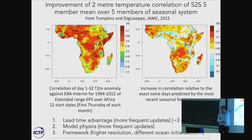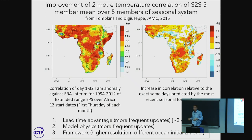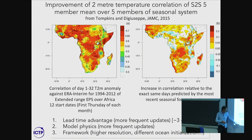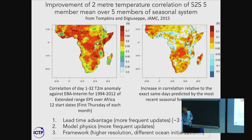Also, the ECMWF sub-seasonal system is updated with each new operational version — two or three times a year there's a new forecast system with physics upgrades incorporated into the monthly system, whereas you have to wait a little bit longer to see those benefits in the seasonal system. And the S2S is a higher resolution system, so there may be some advantages there. At the moment I'm trying to split those three effects apart.